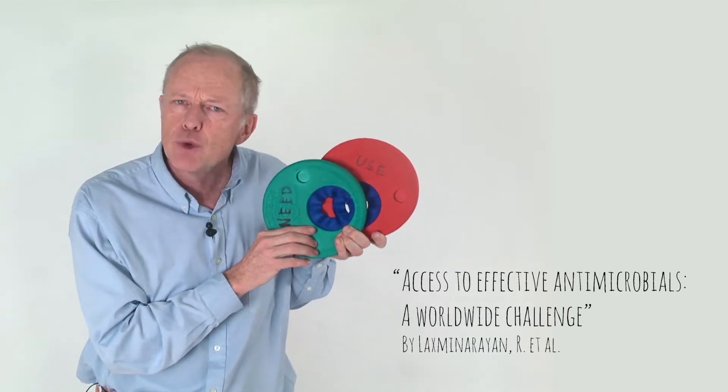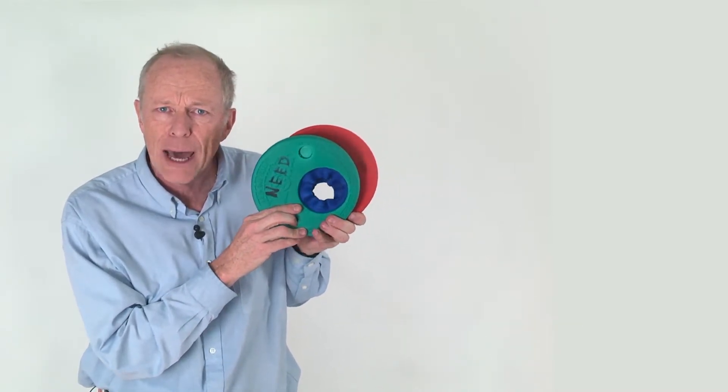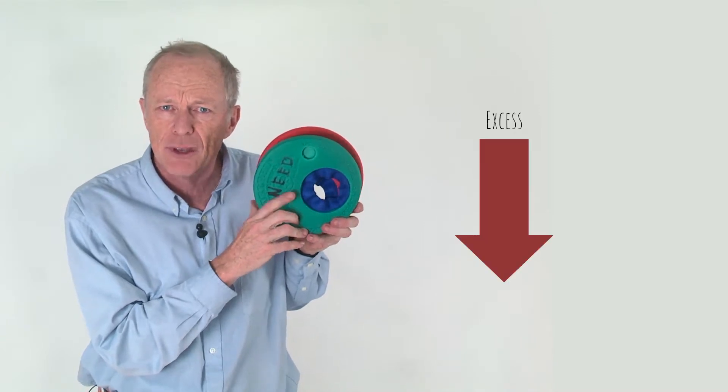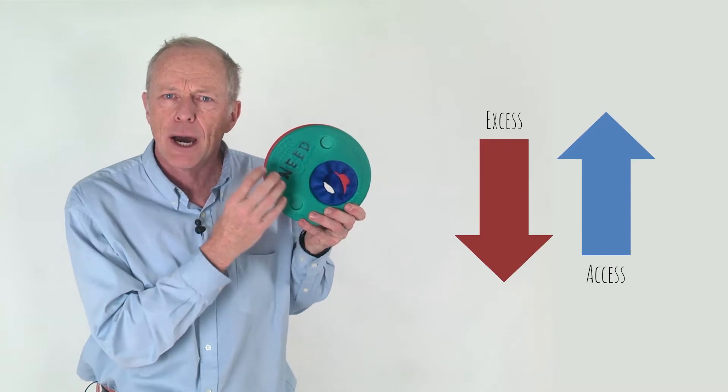Now as we try to do something about this, obviously we want these cycles to overlap. We want to reduce excess use and we want to increase access. What are our options?